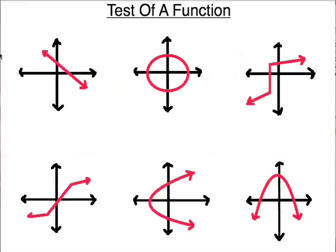Now let's look at some graphs. We have another test called the vertical line test. It works like this: if I can draw a vertical line on my graph and make it pass through more than one point, then it's not a function. I can't do that here — I can't draw a vertical line anywhere and make it pass through more than one point on this red line. So yes, this is a function. It passes the vertical line test.